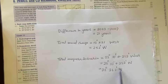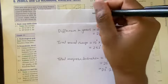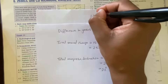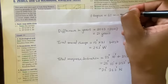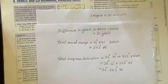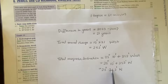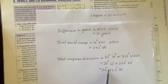23 degrees 262 minutes west is not your final answer. In geography, 1 degree equals 60 minutes, and 1 minute equals 60 seconds. When you get this answer, your minutes are not supposed to be greater than 60, meaning you have to subtract 60 and add a degree to your degrees until the minutes are less than 60.